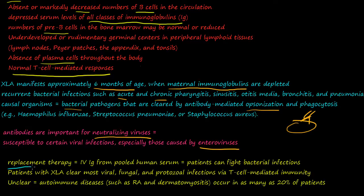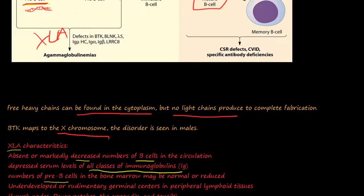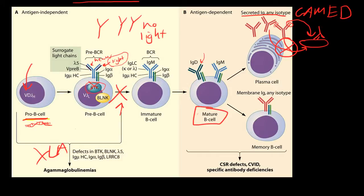Patients can be placed on replacement therapy with intravenous immunoglobulin (IVIG), receiving immunoglobulins from other people's serum to help fight bacterial infections. Patients with XLA can still clear most viral, fungal, and protozoal infections because their T cell-mediated immunity is intact. Interestingly, up to 20% of XLA patients also develop some form of autoimmune disease, though the link between these observations is not yet fully understood.